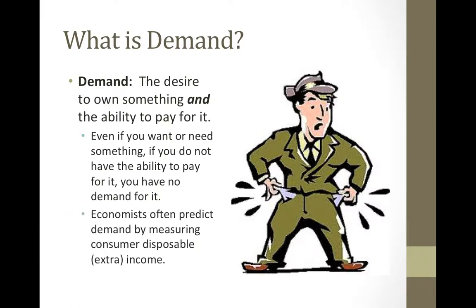Economists often predict demand by measuring consumer disposable or extra income. This whole idea can be a little confusing to people, because we're used to using the word demand in a very broad sense. But for economics, you must have the ability to pay, and this usually comes in the form of disposable income, which is money that you have above and beyond your basic needs, such as food, rent, and things of that nature.